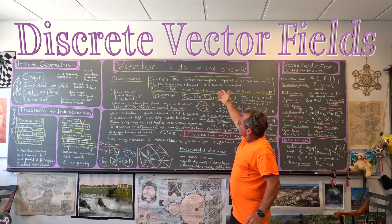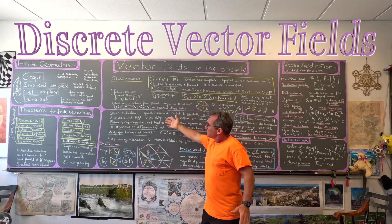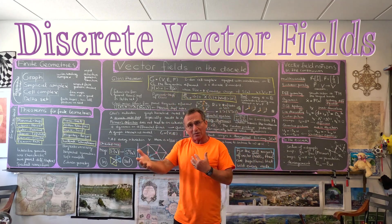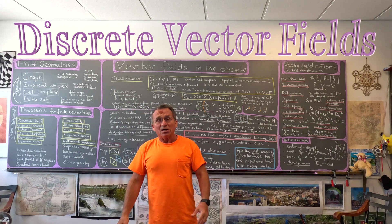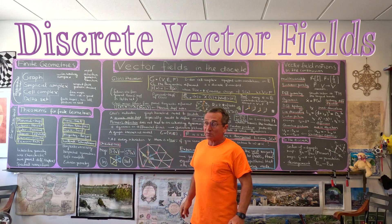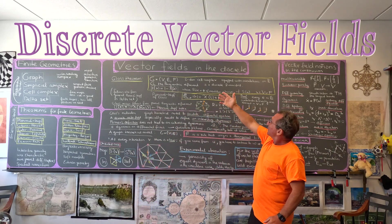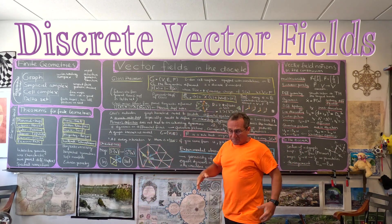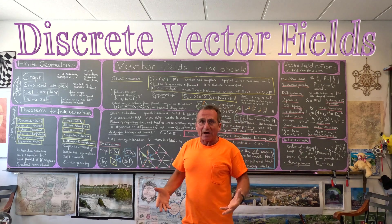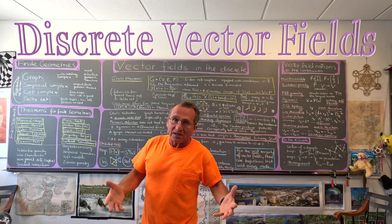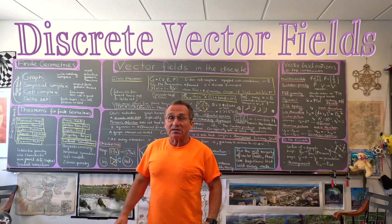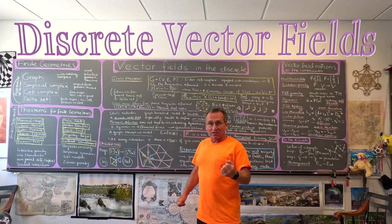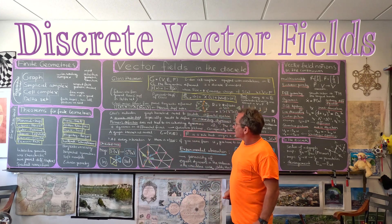What one can also look at are directed graphs. For directed graphs one has a notion of already a vector field, and today I actually wanted to say something about what you mean with a vector field in the discrete. It's an interesting question.